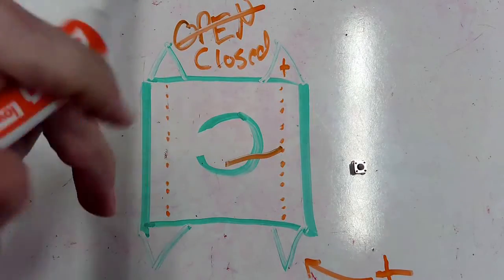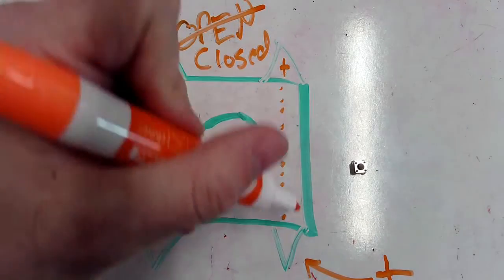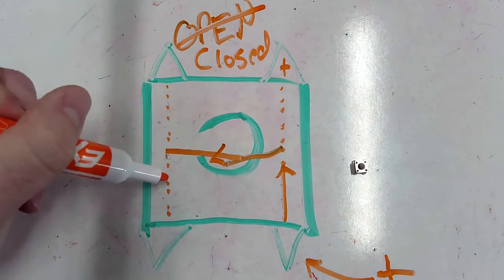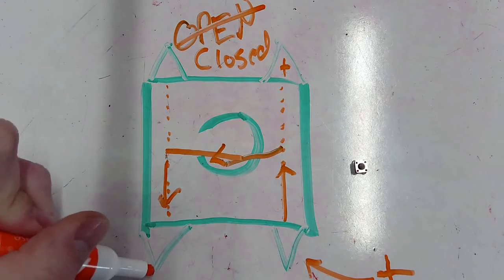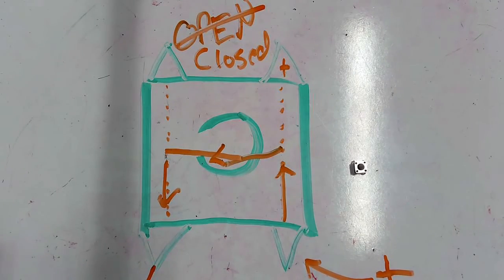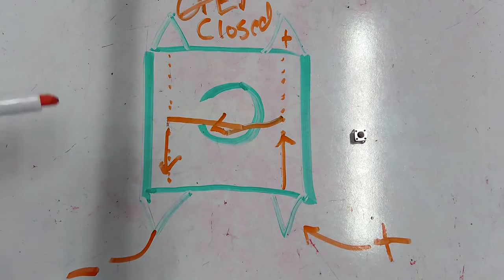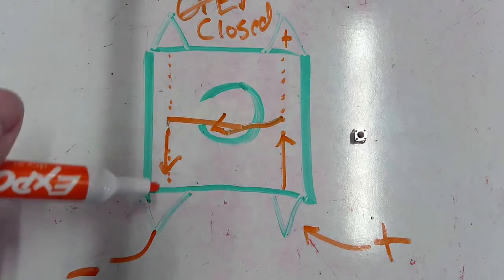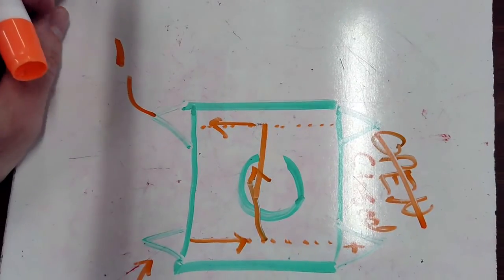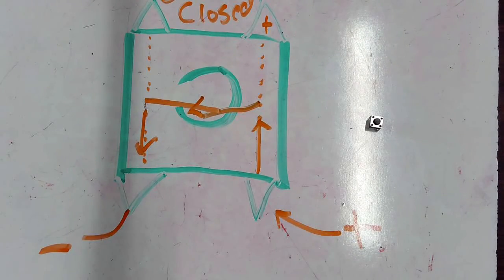When I push the button, I'm pushing that conductor down onto the other conductor. Now the current can go up, through my conductors, and over to the other side. As long as that side has a path to the negative, I have a flow of current through my button. So remember, we want to make sure the legs are pointing up and down, not side to side.